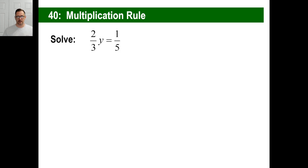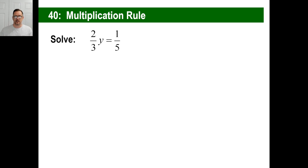Let's try another one. This looks kind of funky: 2-thirds y equals 1-fifth. I guarantee you, 95% of people are not going to be able to solve this in their heads. You're going to have to multiply both sides. You don't want 2-thirds y — you want 1y. You want to be able to say y equals something. So to turn 2-thirds into just y, we're going to use the reciprocal rule.